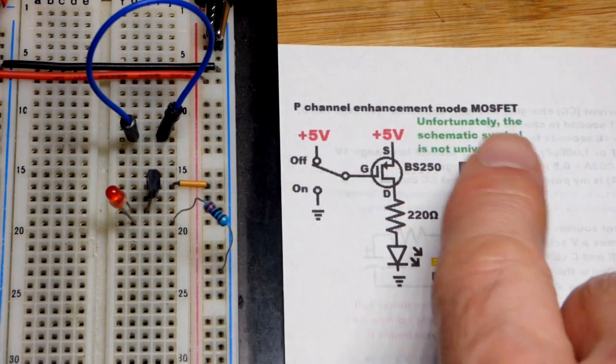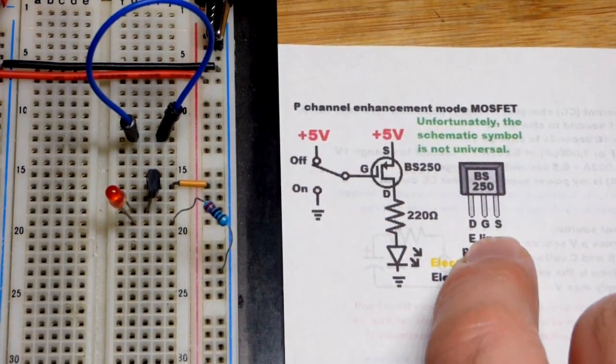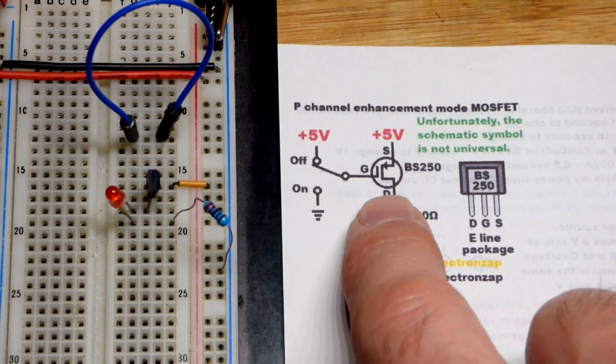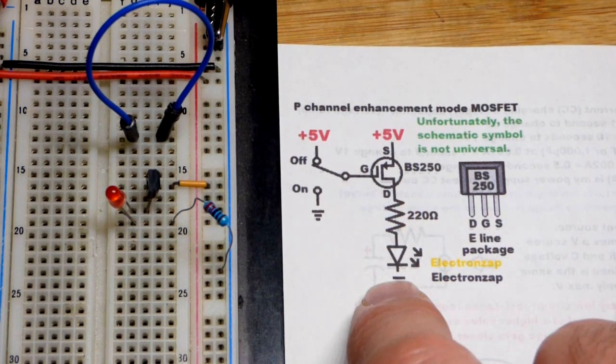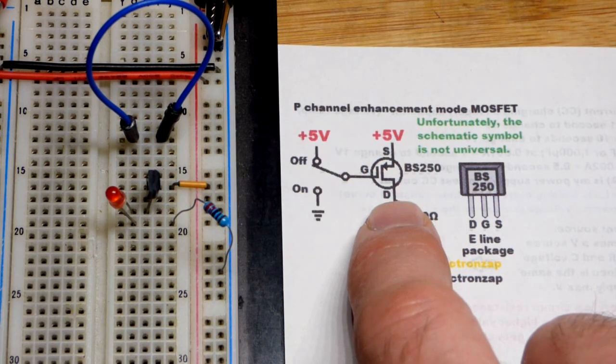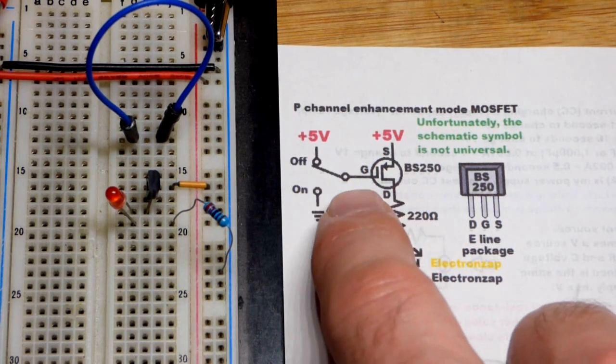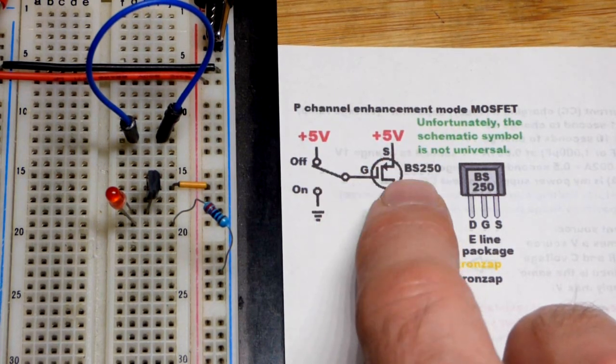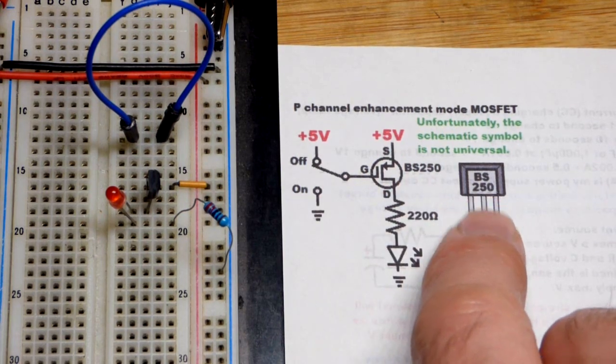So now in this video we're going to look at the P-channel enhancement mode MOSFET, a type of transistor. This will look similar to bipolar junction transistor circuits for the PNP, but it's actually quite different. We have a voltage that determines whether this transistor is on or off.